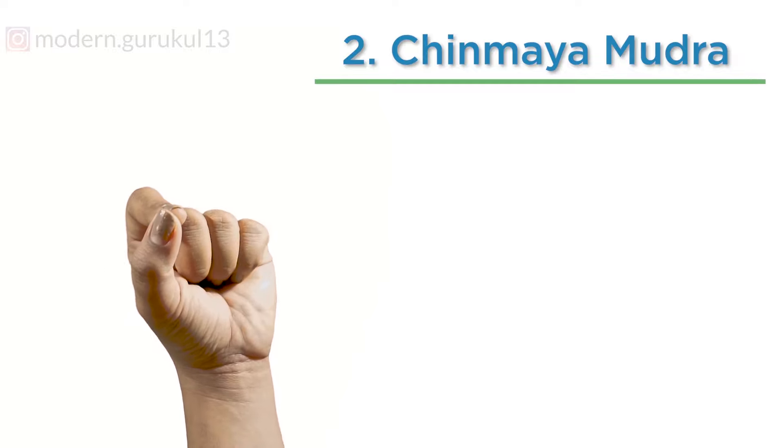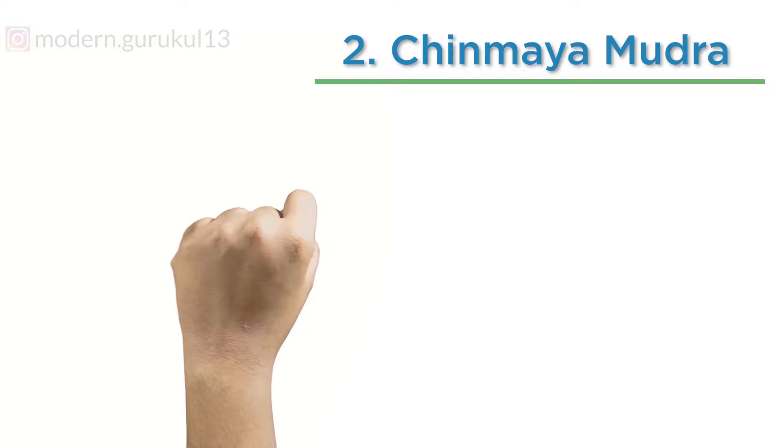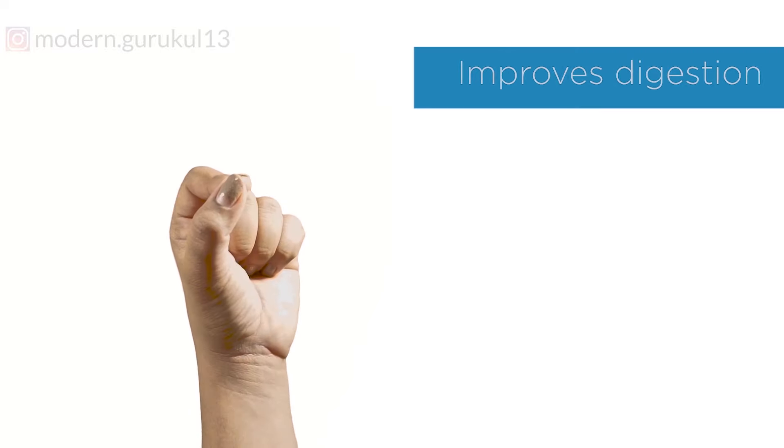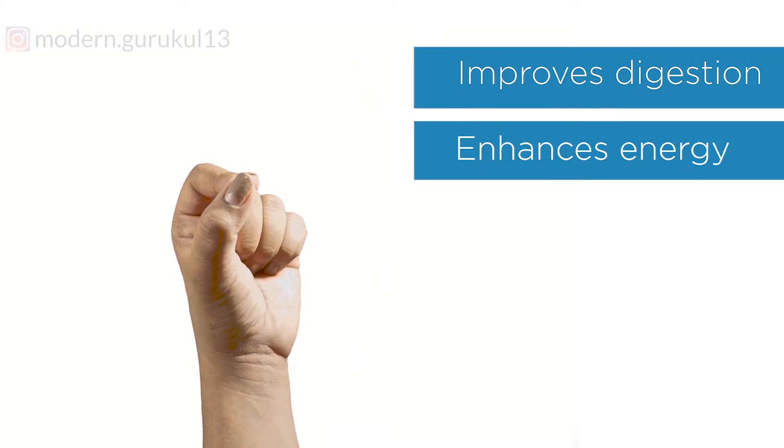Chin Maya Mudra: The tip of the thumb touches the tip of the index finger and other three fingers are folded inwards. Chin Maya Mudra improves digestion, other stomach related problems, and it also enhances energy in our body.